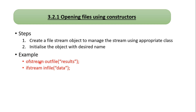For example, ofstream is a class. An object will be created — the name of the object is outfile. This is the output stream. The stream is connected, and the results are connected to the output file.